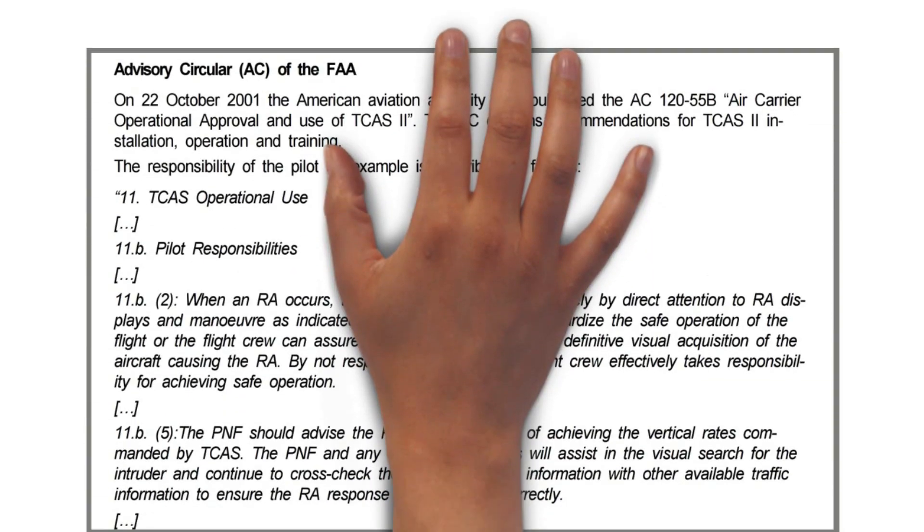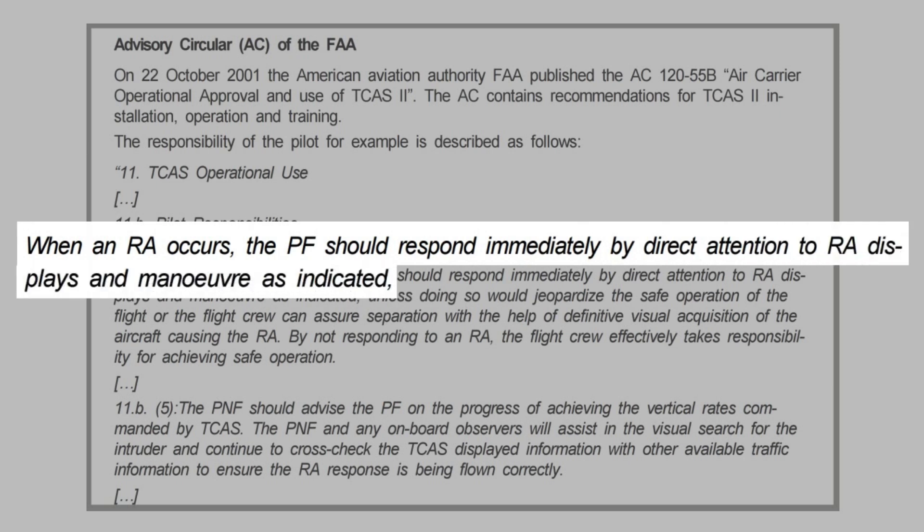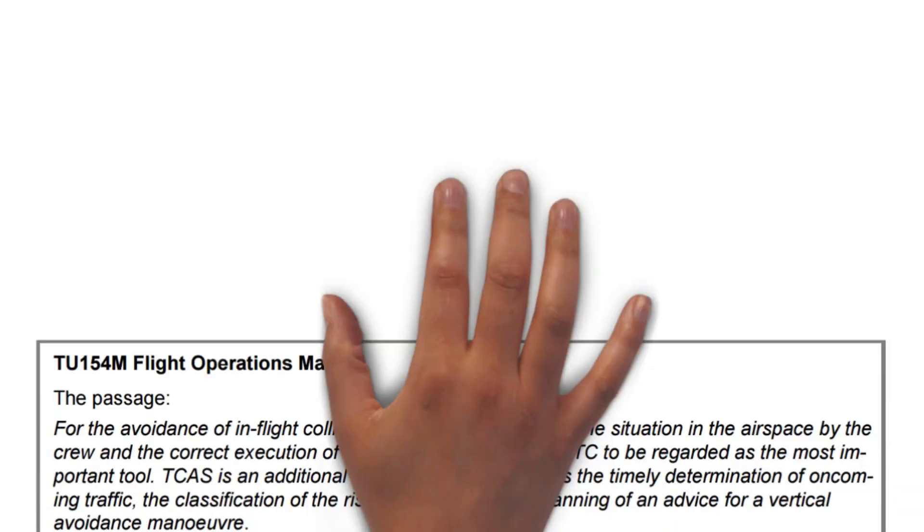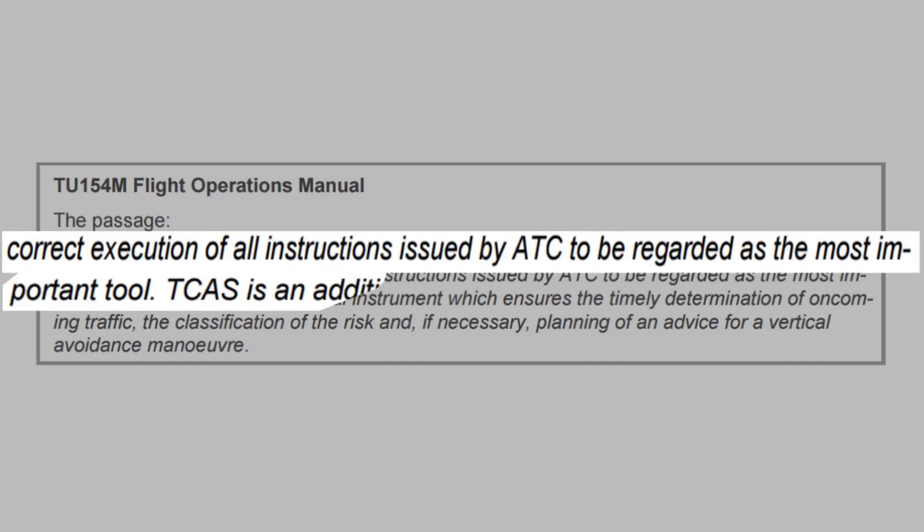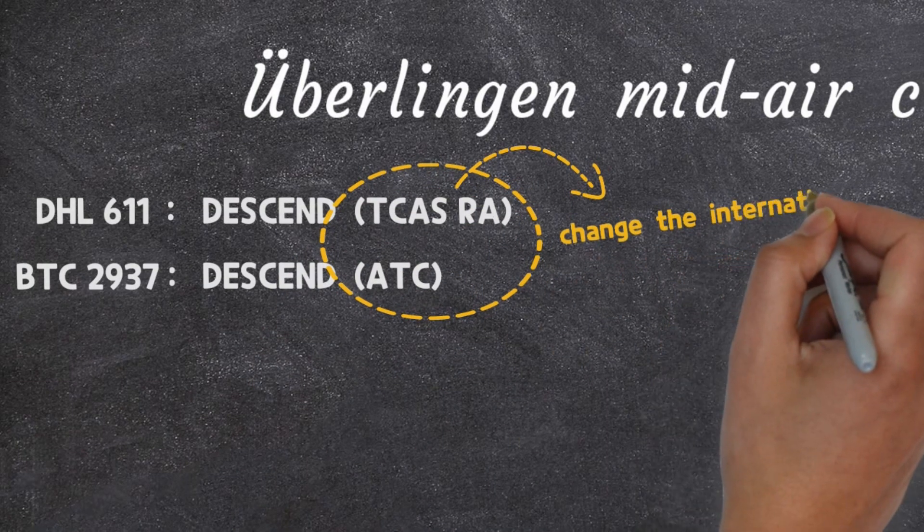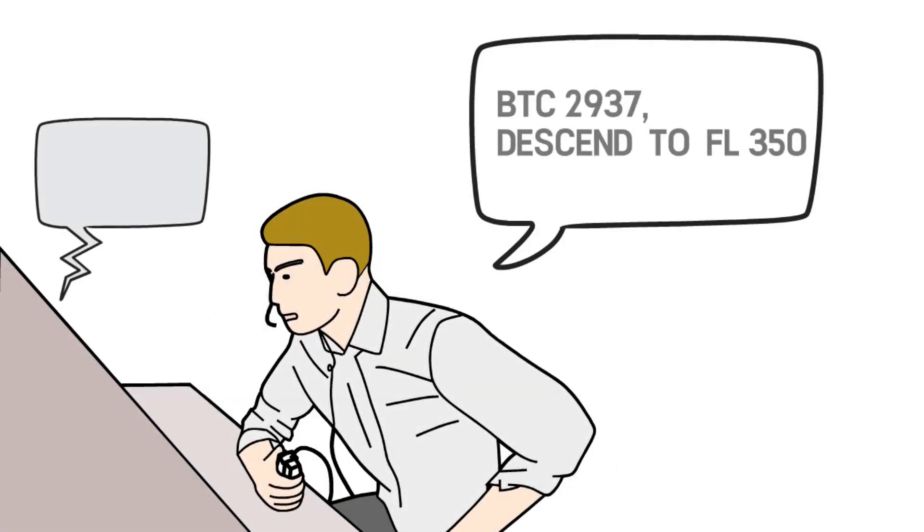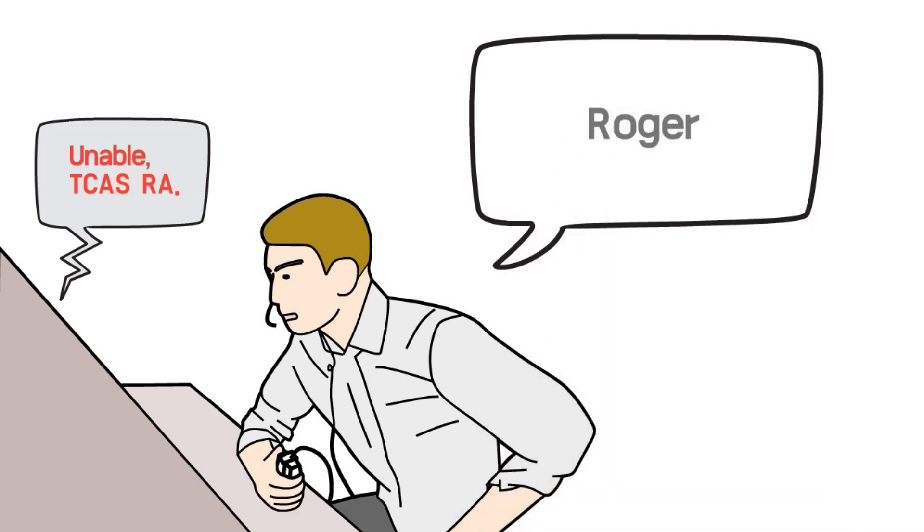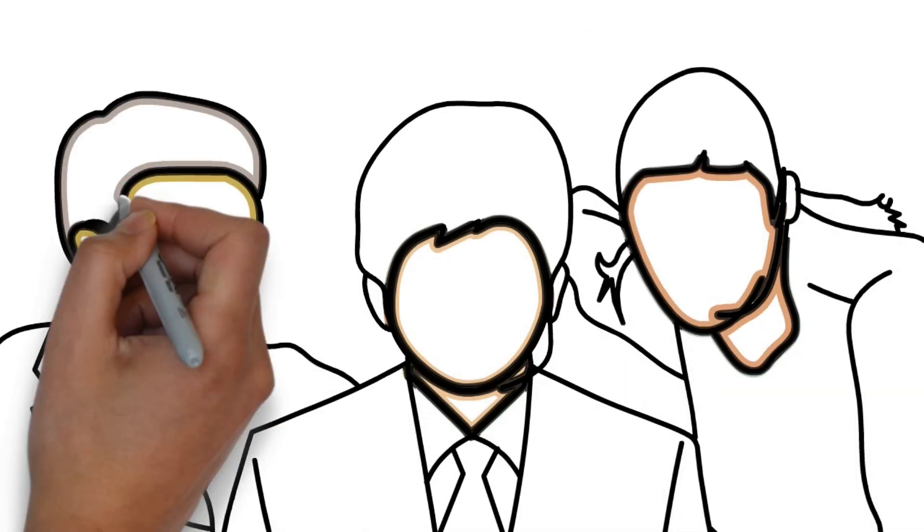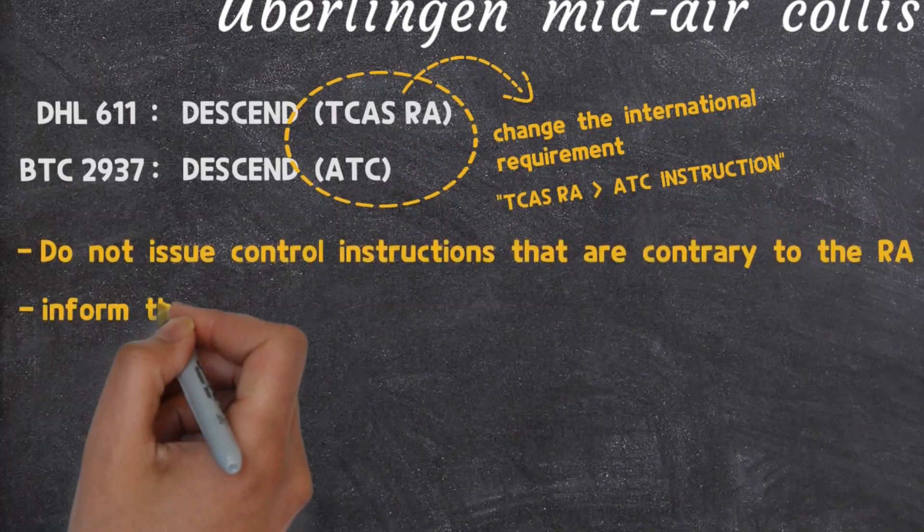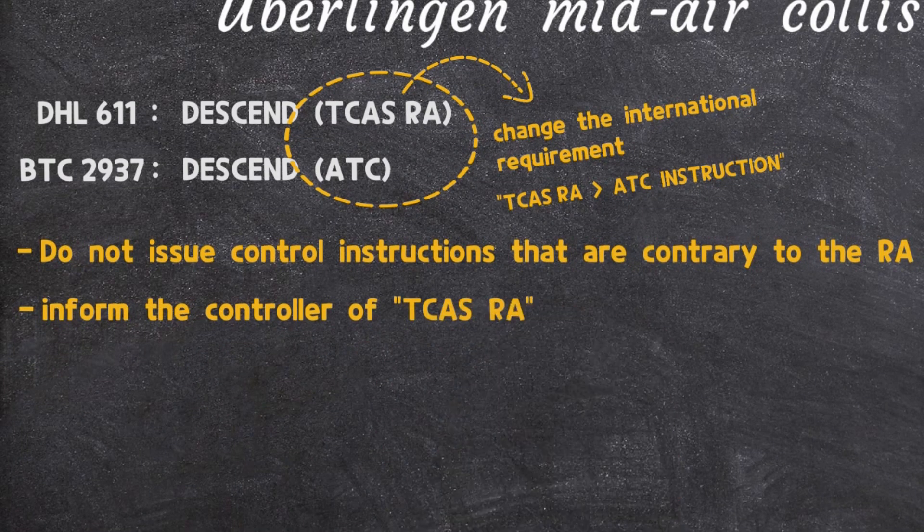When this accident happened, DHL-611 followed the FAA regulation standard. For this reason, as soon as the TCAS alarm sounded, it was possible to descend according to the TCAS instruction, but the Russian regulation for BTC-2937 leaves the pilot to choose which instruction to follow when the TCAS alarm and the controller's instructions differ. After this incident, ICAO and FAA stipulated a common rule to prioritize TCAS alerts over air traffic controllers' instructions when receiving TCAS RA alerts. This means that the controller should not give contrary instructions to the RA warning when the pilot is implementing the RA warning. Also, since the control unit cannot know the TA or RA generated by the aircraft, there is a possibility that the controller will give contradictory instructions that confuse the pilot. Therefore, the pilot must report the avoidance maneuver by TCAS RA alarm to the control unit.